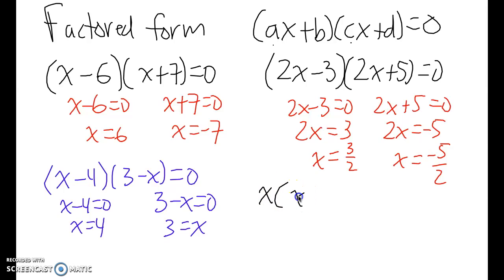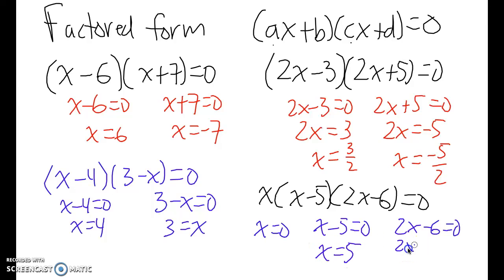So if I have a more complicated expression, say X times X minus five times the quantity two X minus six equals zero, I can say that either X is equal to zero from the first one, or X minus five is equal to zero, or 2X minus six equals zero. Obviously, if I had more factors, I'd just keep setting them all equal to zero. In this case, I only have three. But this will give me three answers.